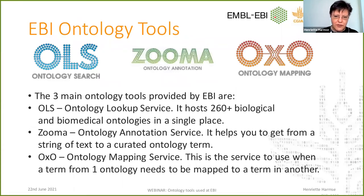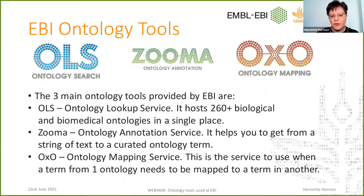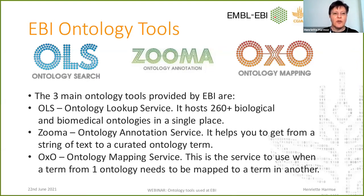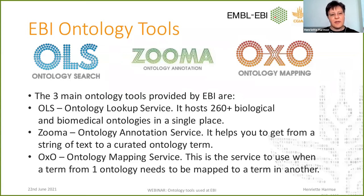The tools we have are OLS, Zooma, and OXO. OLS is the Ontology Lookup Service — that's where you go when you want to find information about a specific ontology or term. Zooma is the service you use when you have some text that you would like to map to an ontology term. And OXO helps when you find a term in one ontology but want to map it to a term in a different ontology that you prefer to use in your environment.